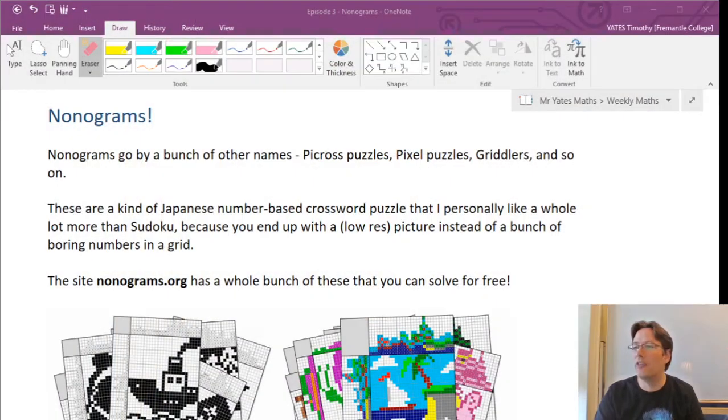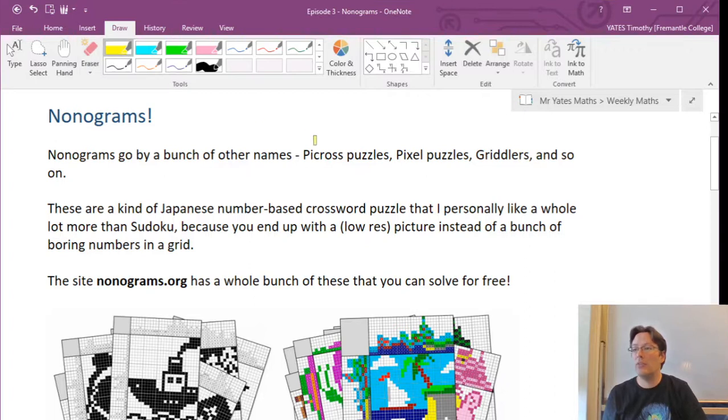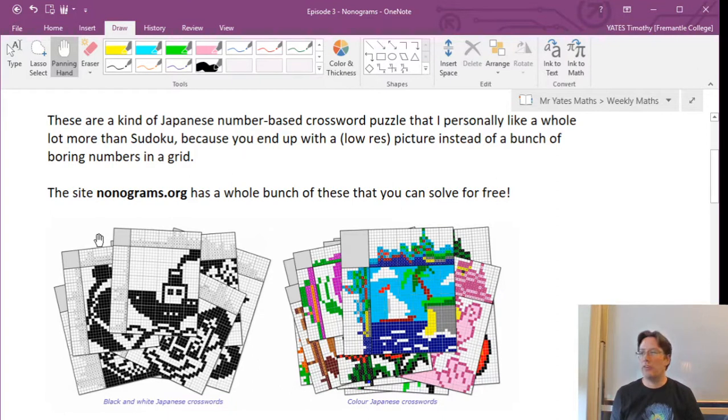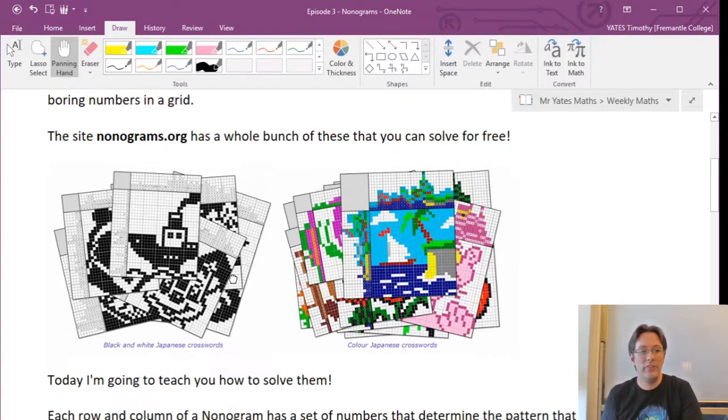Today we're going to be looking at nonograms, and nonograms are a kind of Japanese puzzle. They go by a bunch of different names. Sometimes they're called Picross puzzles, sometimes Pixel puzzles, or Gridlers. These are a kind of Japanese number-based crossword puzzle that I personally like a lot more than Sudokus, because when you solve a nonogram, you end up with a nice little picture instead of just a grid of numbers. One of the typical locations you can get free nonograms from is the site nonograms.org, and they've got black and white nonograms as well as color ones.